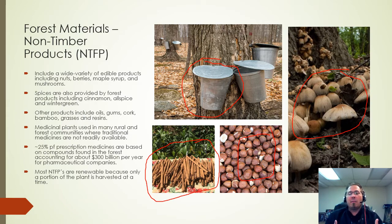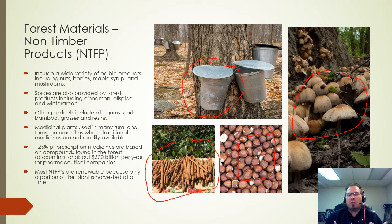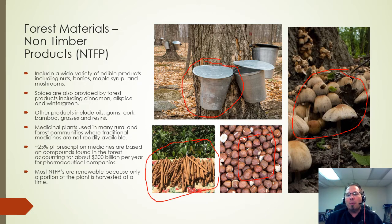One of the good things about non-timber products is that for the most part, you don't need to harvest the whole plant. You don't need to cut down a tree for maple syrup or cinnamon — you just shave off the bark. Same with berries and nuts — you're not killing the plant, just harvesting the fruits. So that makes them automatically renewable. Mushrooms are a bit different, but they're pretty prolific, so you're not going to run out very often.